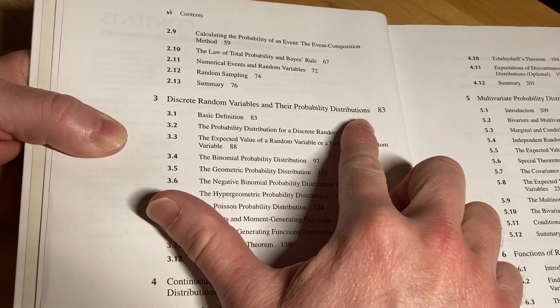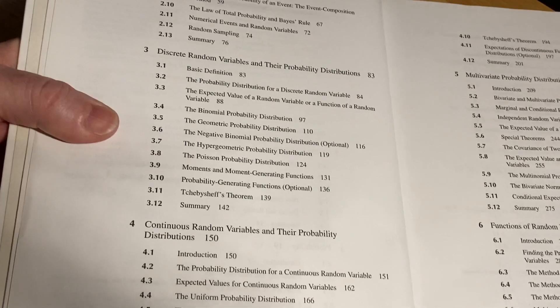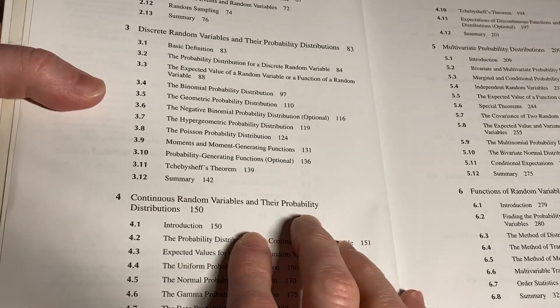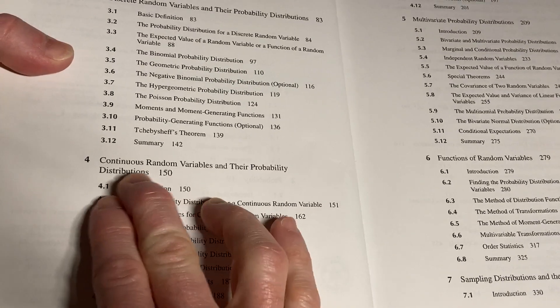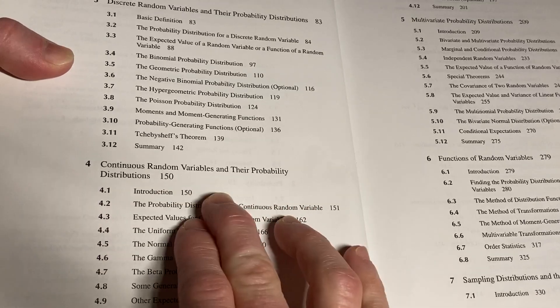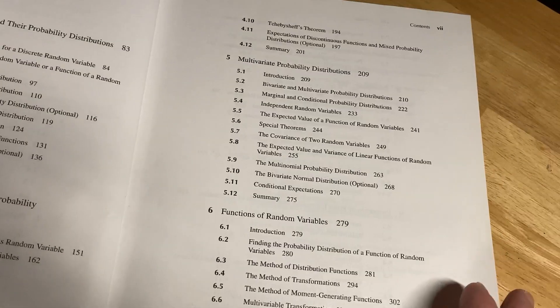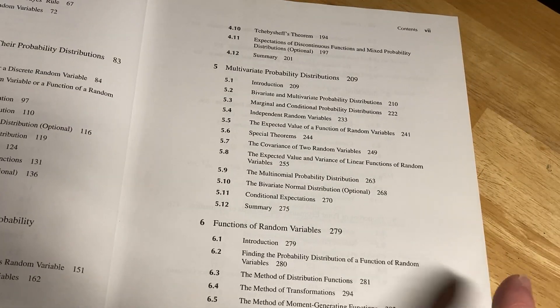And he got an A in every class except this one. And he got Cs in both sections of the course using this book because it's so hard. Discrete random variables and their probability distributions. I mean, he struggled, and it's because he lacked a lot of the proof writing background, I think. And it's just a harder course. It's a big game changer.